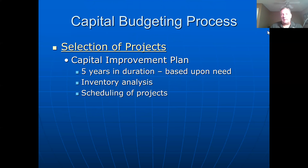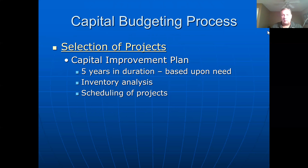Since we are primarily concerned with state and local budgeting in this class, we'll focus on the capital budgeting process. Capital budgets are predicated upon a planning process called a capital improvement plan, or CIP. Every government should have a CIP, and it is multi-year in nature — usually about five years — where you schedule out all capital projects from year one through year five.